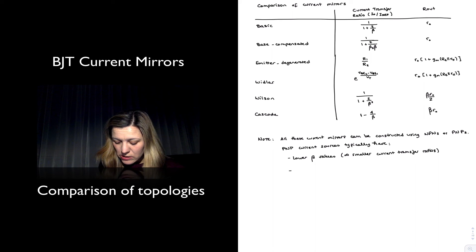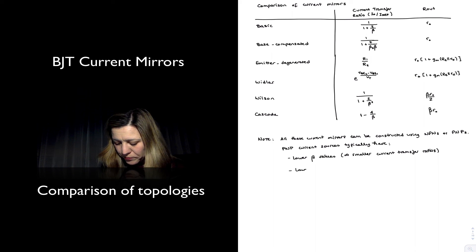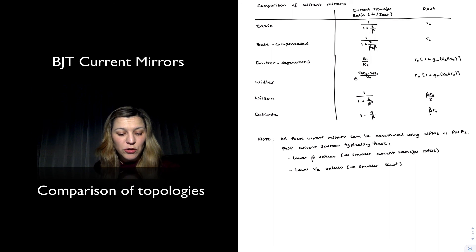Second characteristic is that PNP transistors in general will have lower values for the early voltage, and as you can see, most of these output resistances are directly dependent on the value of little r o, which is related to the value of the early voltage. It is the early voltage divided by the collector current, approximately. So lower early voltage values will typically yield a smaller output resistance than the NPN counterparts.